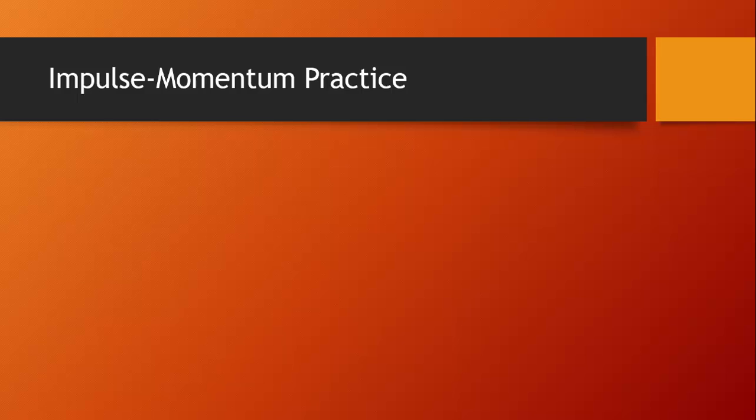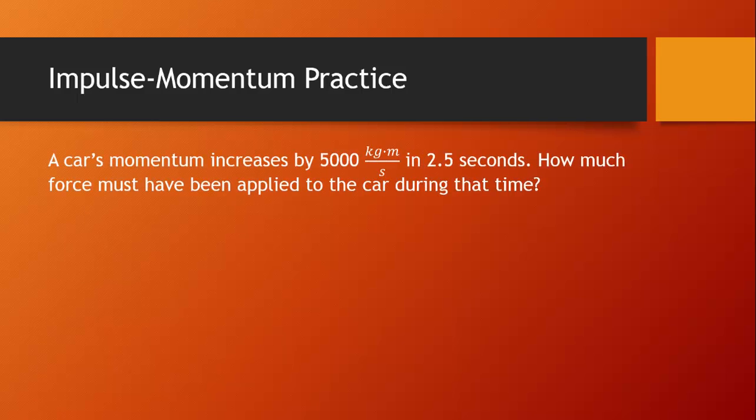Let's take a look at an impulse momentum problem where we have to use the make your own equation bar. A car's momentum increases by 5,000 kgm per second in 2.5 seconds. How much force must have been applied to the car during that time? So first we'll start with our list of givens. We know that the change in momentum is 5,000 kgm per second. We know that the time it takes is 2.5 seconds. And we know that we're looking for the force.